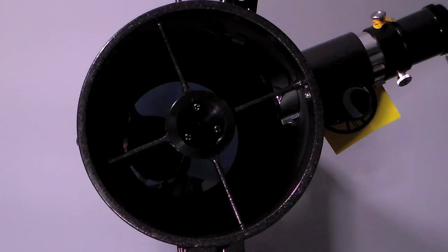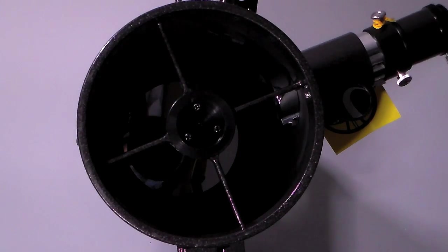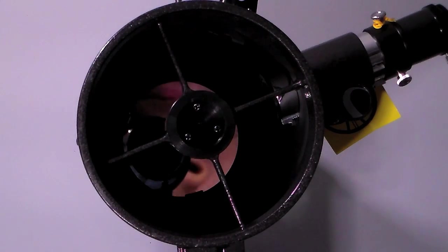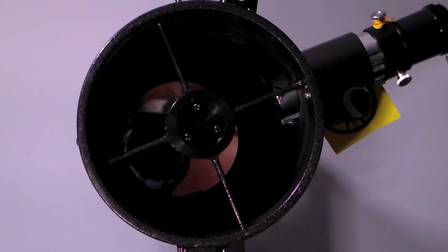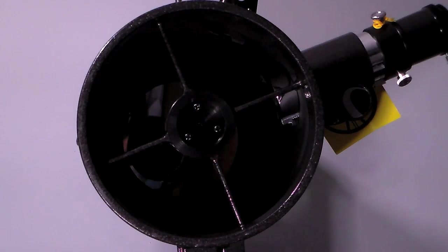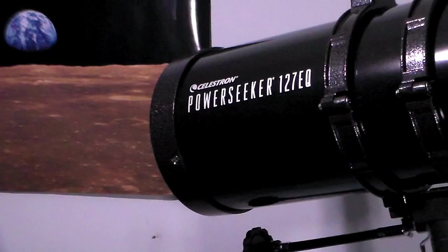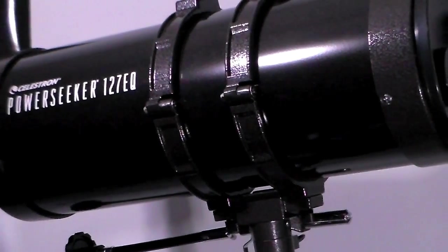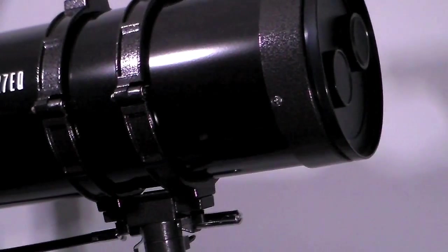It has an aperture of 127 millimeters or 5 inches and a focal length of 1000 millimeters or 39 inches. This telescope can also be considered as a Schmidt-Cassegrain catadioptric telescope. This type of telescope combines a Cassegrain reflector's optical path with a Schmidt corrector plate to make a compact astronomical instrument that uses a simple spherical surface.